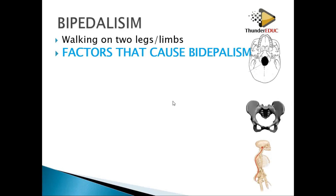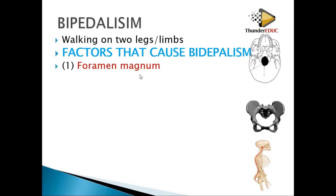There are three factors which cause bipedalism. Number one: foramen magnum. The position of the foramen magnum will show whether an organism is bipedal or quadrupedal.